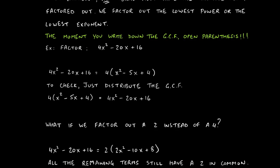So we factor out 4, leaving x² − 5x + 4 inside the parentheses. To check, you can always distribute back: 4 times x² is 4x², 4 times −5x is −20x, and 4 times 4 is 16 — which takes us back to where we started. Distribution and factoring are essentially opposite operations.